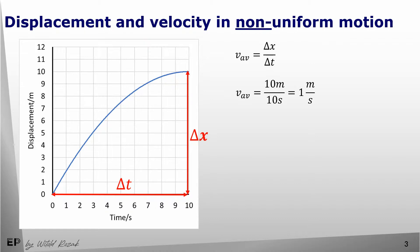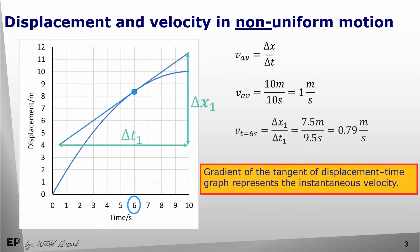In this case, in the first 10 seconds, the average velocity was 1 meter per second. But what if we would like to find an instantaneous velocity at a given moment, let's say at time equal to 6 seconds? If time is short enough, a part of this graph can be considered to be a straight line, with a gradient equal to the gradient of the tangent. So calculating the gradient of the tangent of a displacement-time graph gives us the instantaneous velocity. In this example, at time equal to 6 seconds, the instantaneous velocity is 0.79 meters per second.